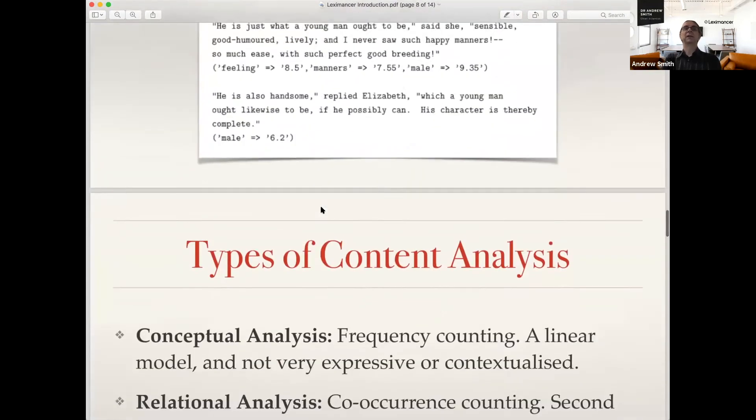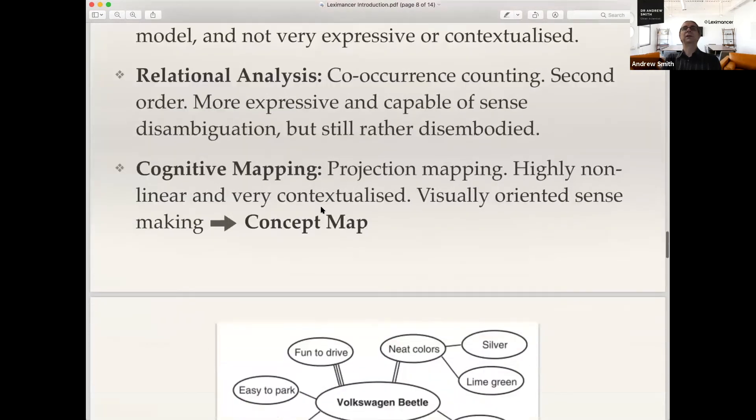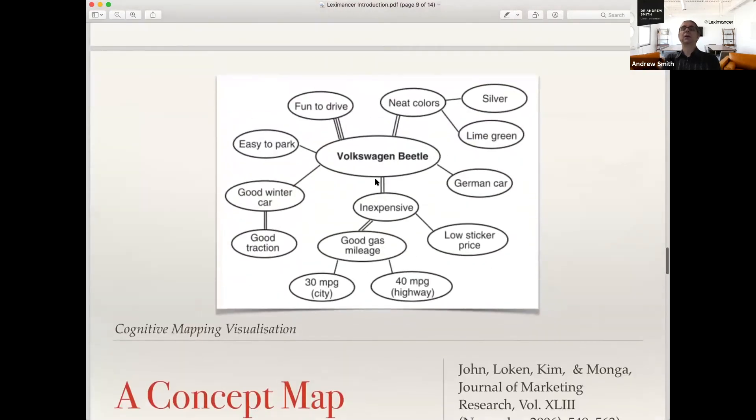Once you've got the concepts, it builds a model. One type of model it builds is a concept map. This is a simple example of a concept map taken from market research. There are aspects of it - the theme, the connection between themes, connections between themes and narratives, and then distance. Distance is difference. One part of the map that's a long way from another part means something pretty different. It's a very different context.